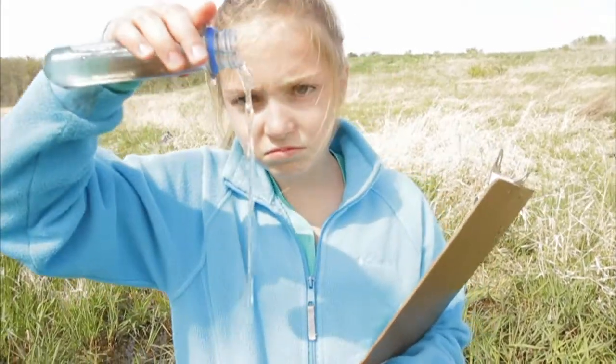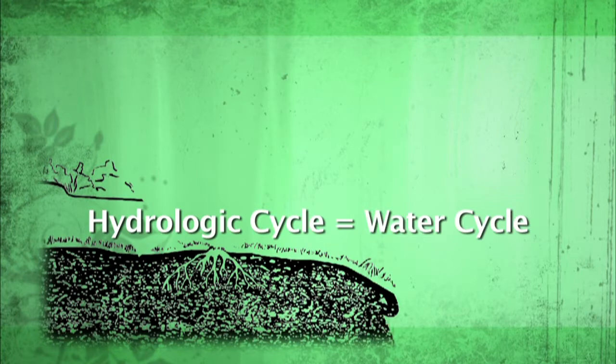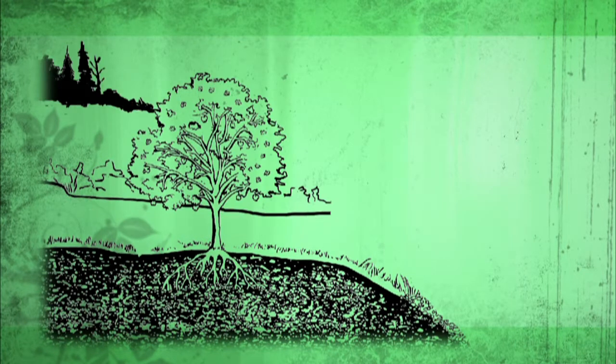So how does this water cycle work? The water cycle, or hydrologic cycle as our scientist friends call it, can be broken up into three major stages.